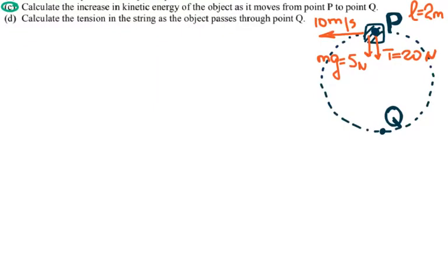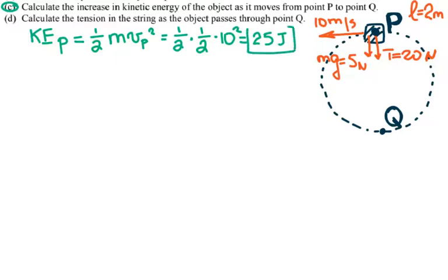For part C, calculate the increase in kinetic energy of the object as it moves from point P to point Q. So at point P, kinetic energy of the object at P is equal to one half mv_P squared. So I have one half, the mass is 0.5, so that is also one half, and v at P is 10 squared. So that's quarter of 100, that is 25 joules. But it also has potential energy at P. If I assume that potential energy at Q is equal to 0 joules.